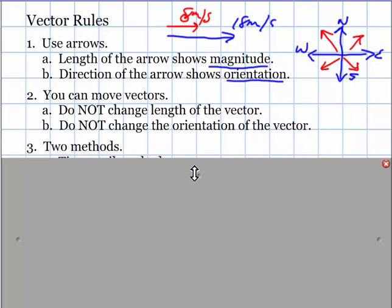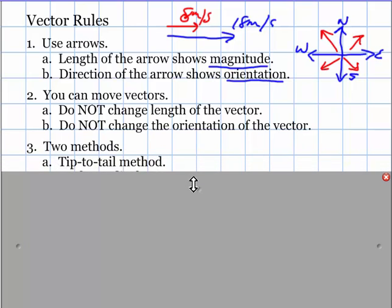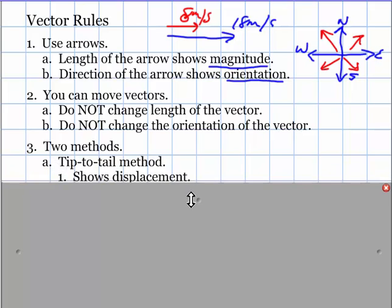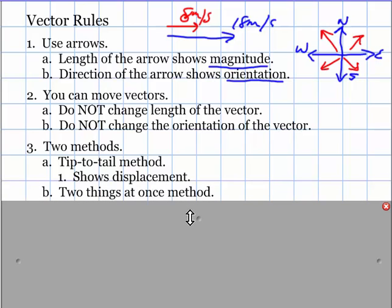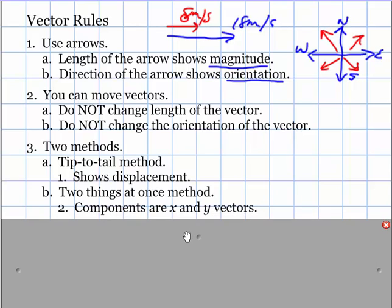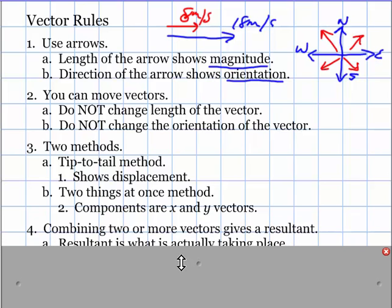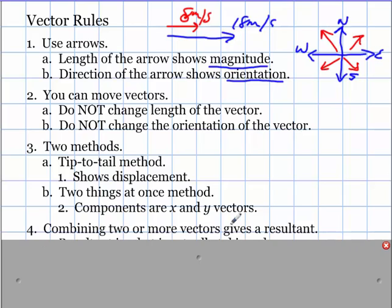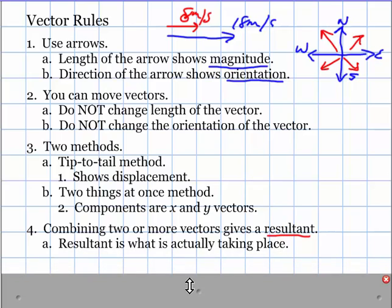There are two methods when we move vectors. There is tip-to-tail method, and the tip-to-tail method always shows displacement. We will look at that in class. The next one is there are two things happening at once. In that method, that means we have two components, or at least two. And those are called my x and my y vectors. And any time you combine two or more vectors, that gives you a resultant.